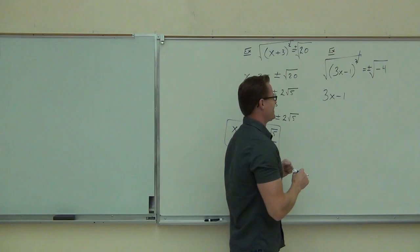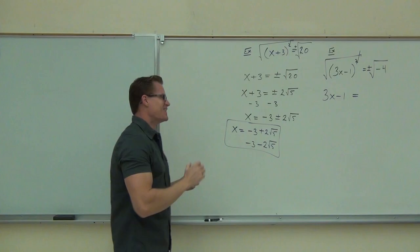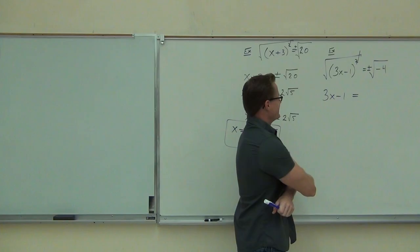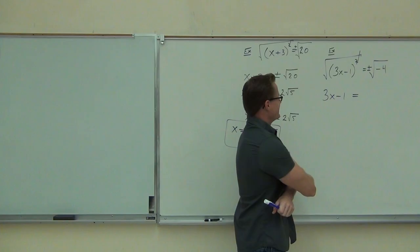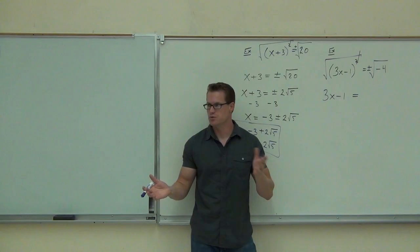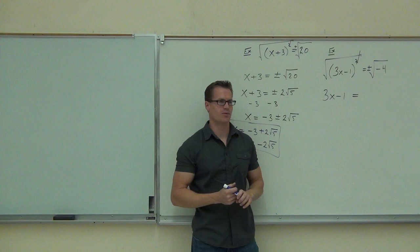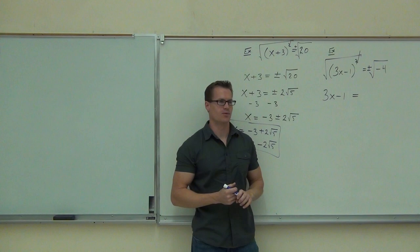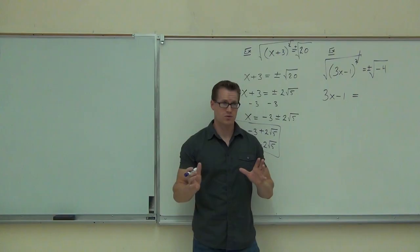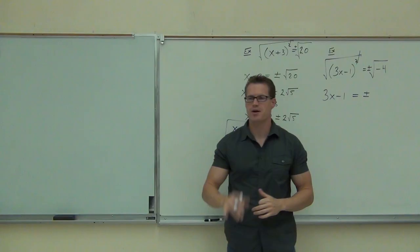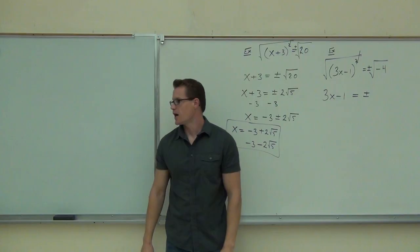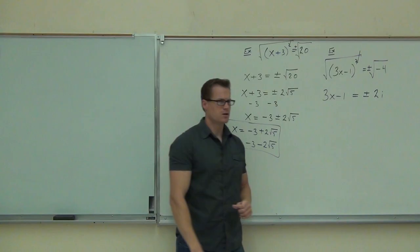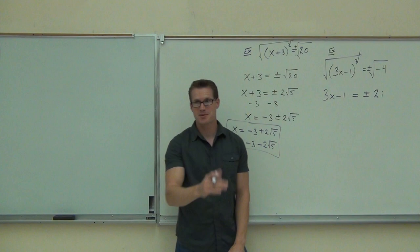You take the square root of both sides just like before. There's never going to be no solution anymore, because you can now take the square root of a negative number. On the left-hand side we get 3x minus 1. On the right-hand side, plus or minus — don't forget the plus or minus — the square root of negative 4 is 2i. So we have 3x minus 1 equals plus or minus 2i.